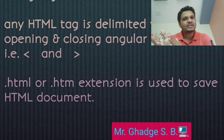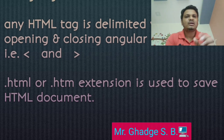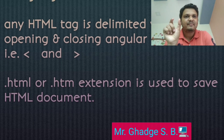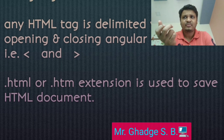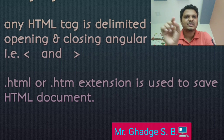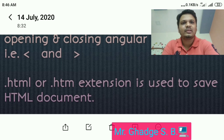Either dot html or dot htm. To save a file, just use Ctrl+S or click on the File menu and select Save. You need a proper file name — for example, first dot html, or index dot html. So the file name is 'index' and the extension is dot html or dot htm.